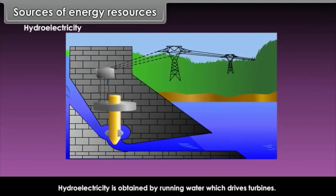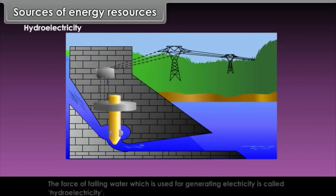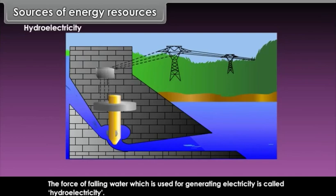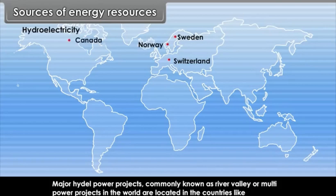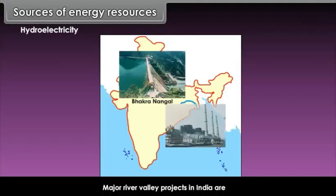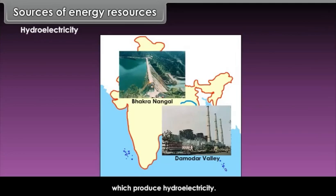Hydroelectricity is obtained by running water which drives turbines. The force of falling water used for generating electricity is called hydroelectricity. Major hydropower projects, commonly known as river valley or multi-power projects, are located in Sweden, Norway, Switzerland, Canada and the USA. Major river valley projects in India include Bhakra Nangal and Damodar Valley Corporation, which produce hydroelectricity.